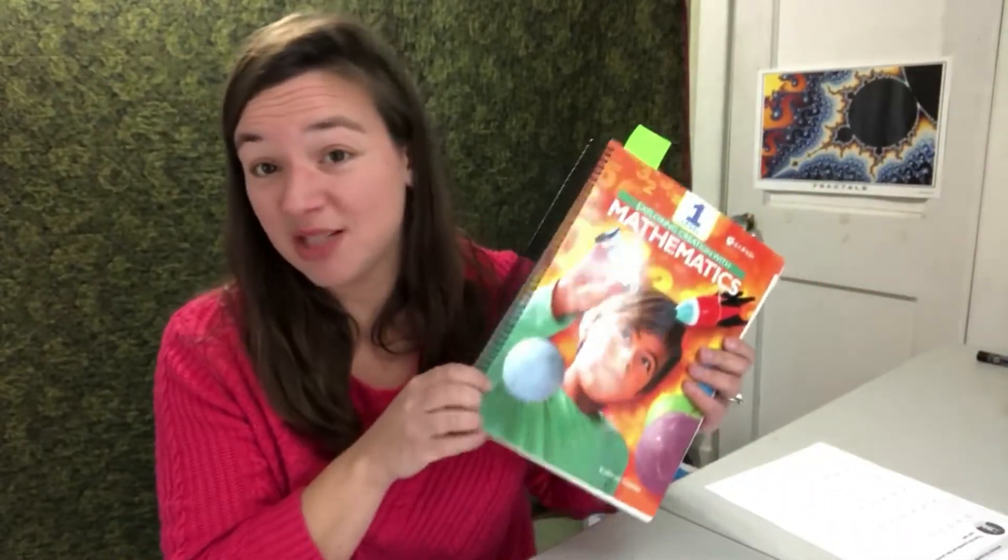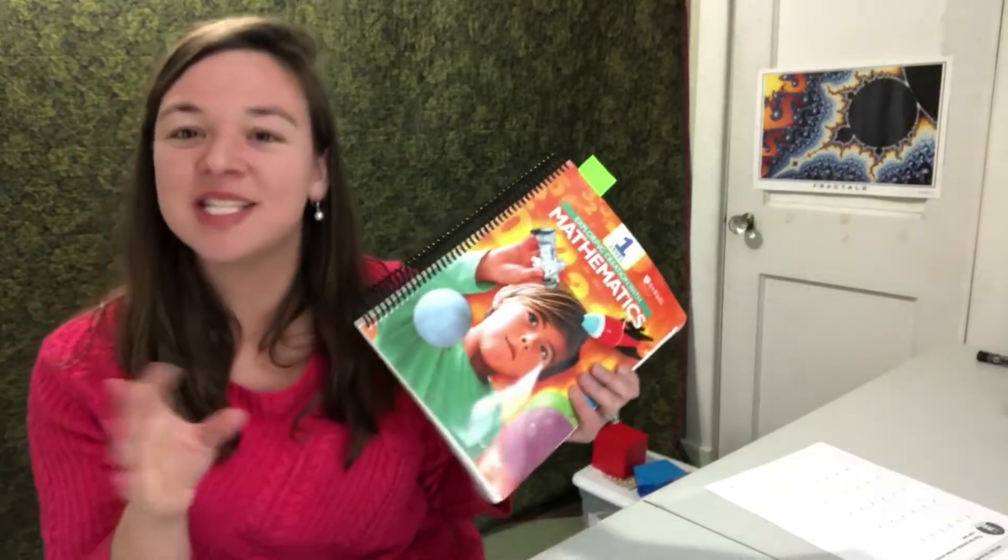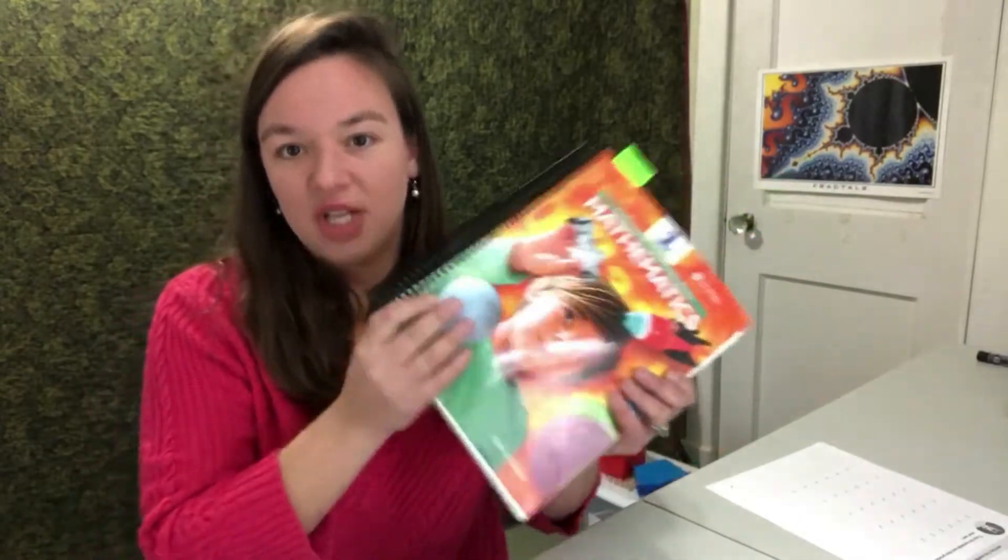There are two skills for Unit 1. Writing the numerals 1 to 10 and putting the numbers 0 to 20 in order. Pretty simple skills, and keep in mind the skills practice isn't super involved for Unit 1 because you just started this book and you're getting used to things and maybe it's the start of school year. So I didn't want it to be overwhelming. So if it feels a little bit quick, that was intentional. It might get a little more involved. It is going to get a little more involved in the other units.